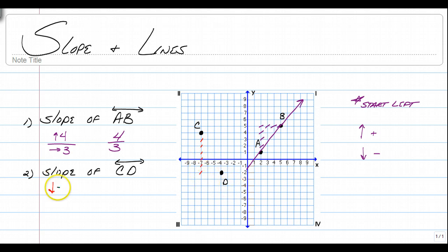You go down 6, which means that's a negative 6, over 1, 2, 3 to get to D. Negative 6 over 3 reduces to a negative 2 slope. And that's it. That's how you read slope from a graph.